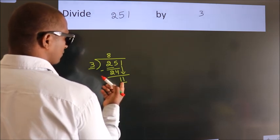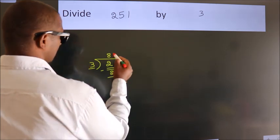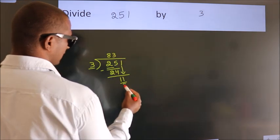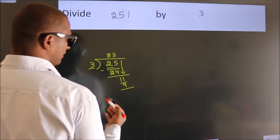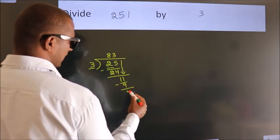A number close to 11 in the 3 table is 3×3=9. Now we subtract. We get 2.